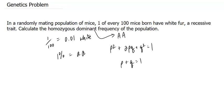In order to understand this formula, you should know that p² represents your homozygous dominant. This part represents your heterozygous, and this part represents your homozygous recessive, little a, little a.